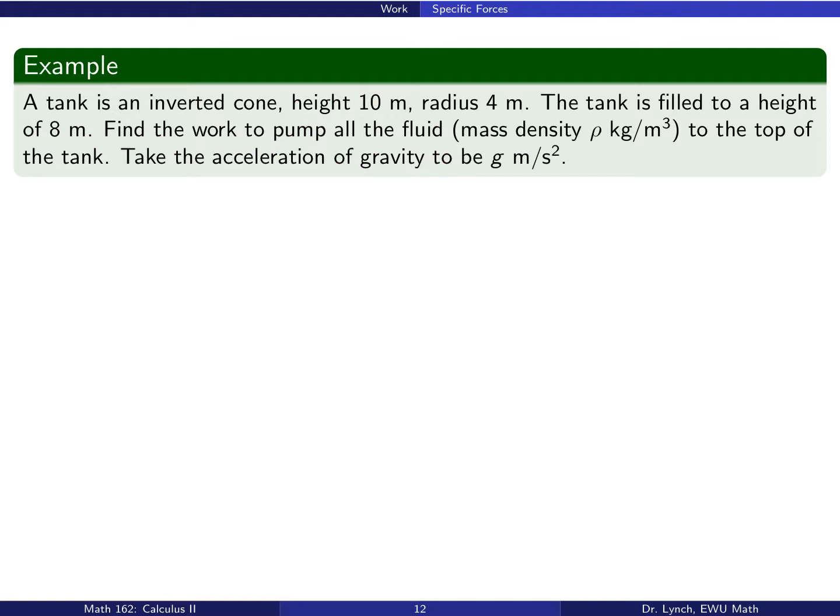Here's an example. A tank is an inverted cone with height 10 meters and radius 4 meters. The tank is filled to a height of 8 meters. Let's find the work to pump all the fluid to the top of the tank, and we'll assume that the acceleration of gravity is g meters per second squared. Okay, so here's our cone. Radius 4 meters, height 10 meters. Water, or fluid in this case, filled to a height of 8 meters. We want to pump all of that fluid to the top of the tank.